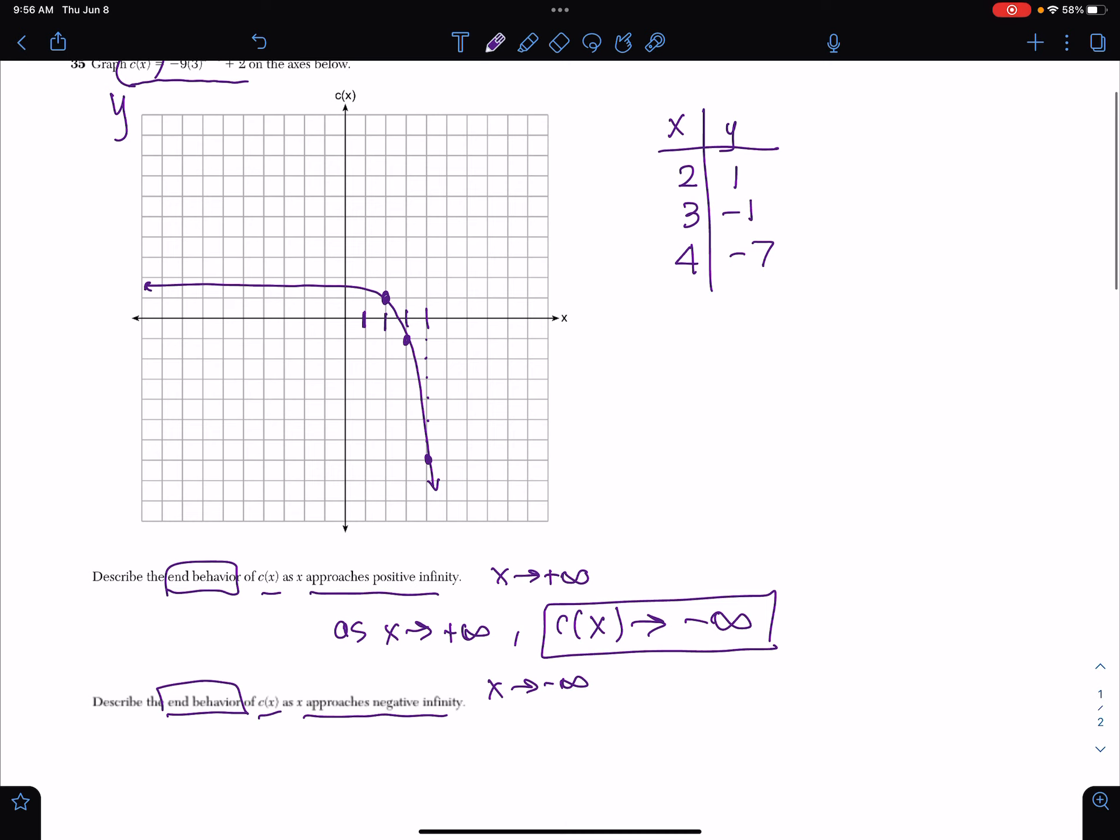Now, likewise, when we look at the other side, it says what happens to c as a function of x as x approaches negative infinity. So as x approaches negative infinity, it's constantly approaching 2. And so as x approaches negative infinity, c of x approaches 2.